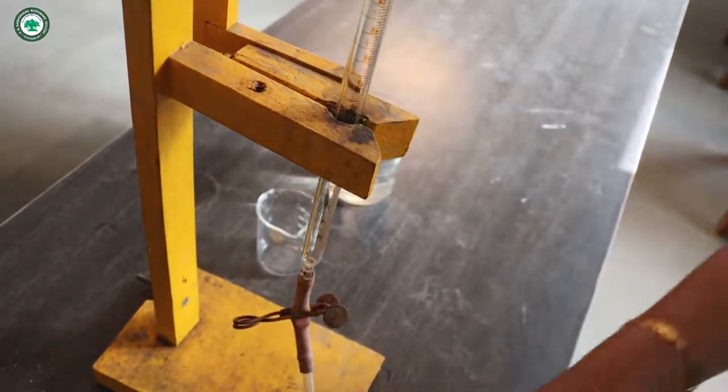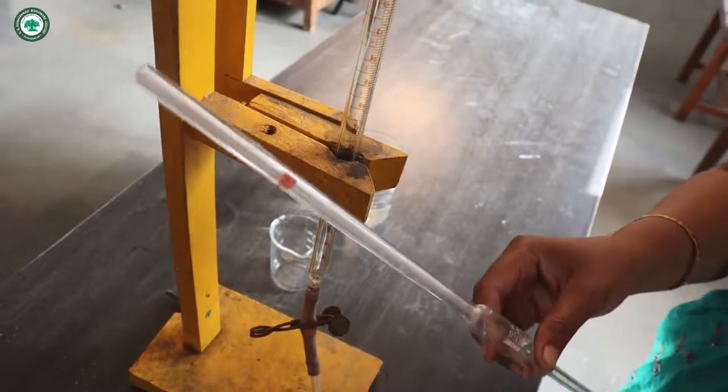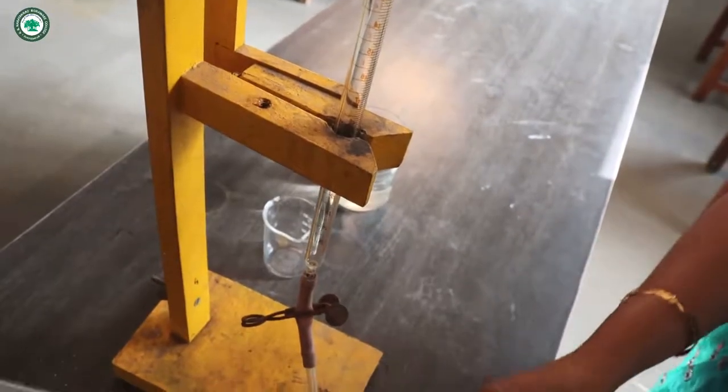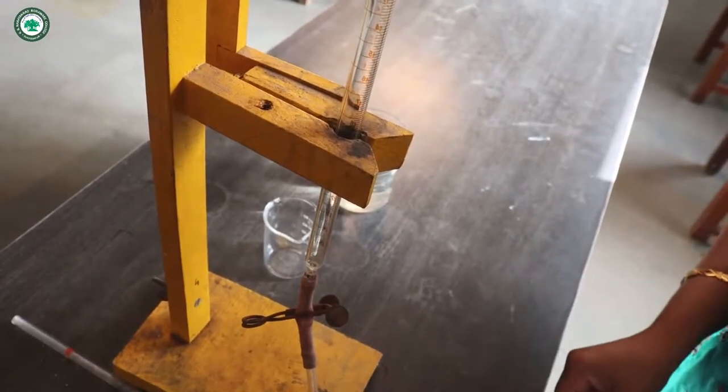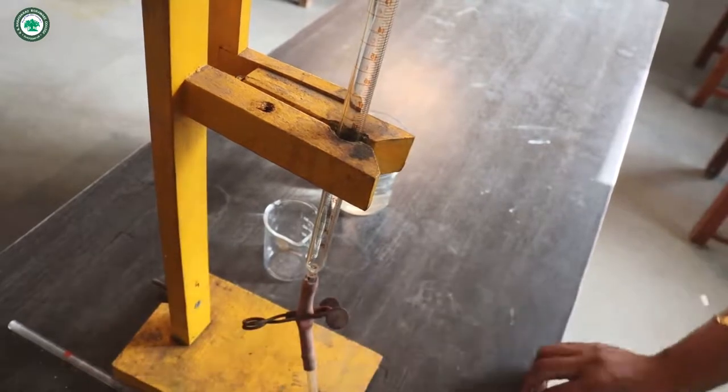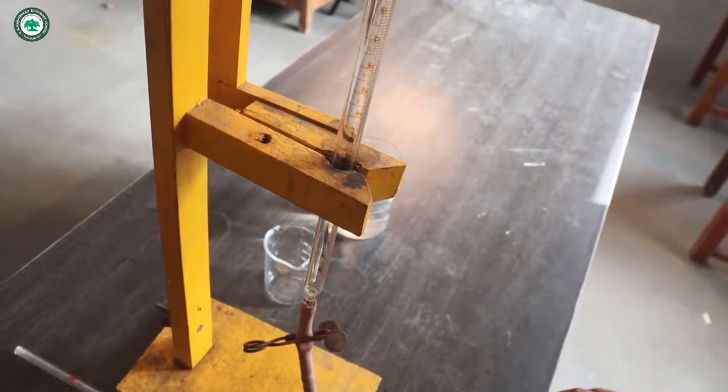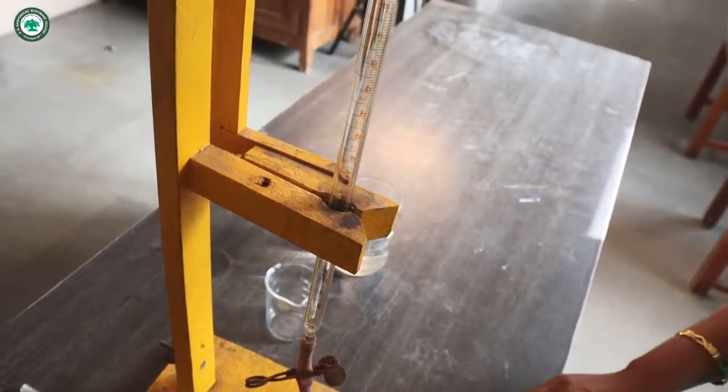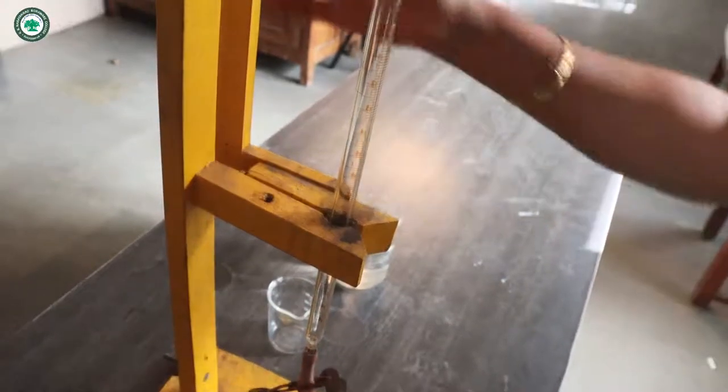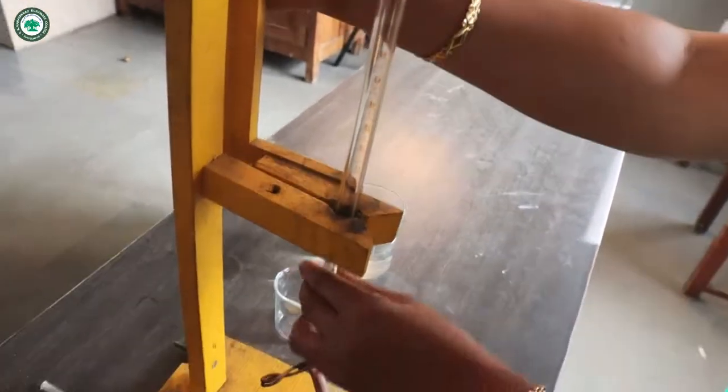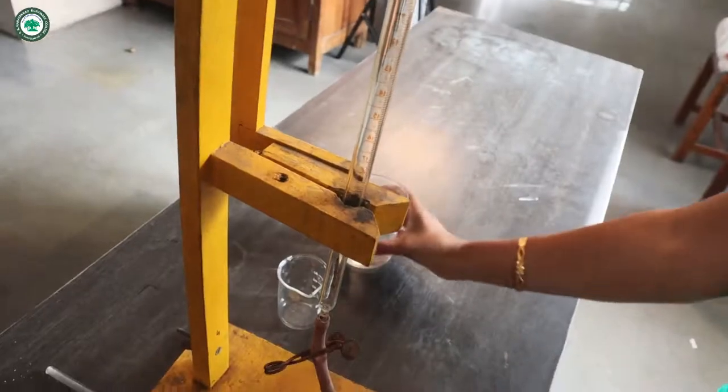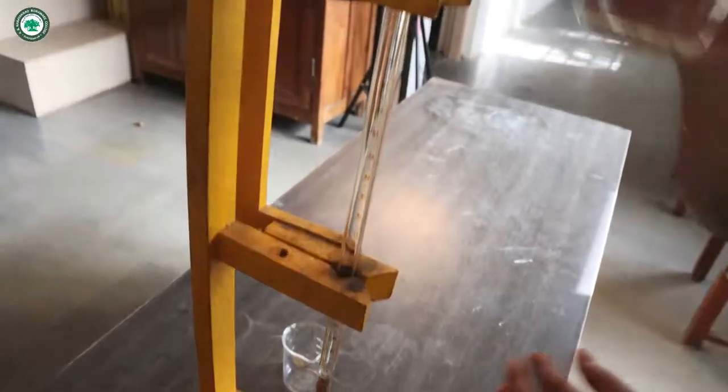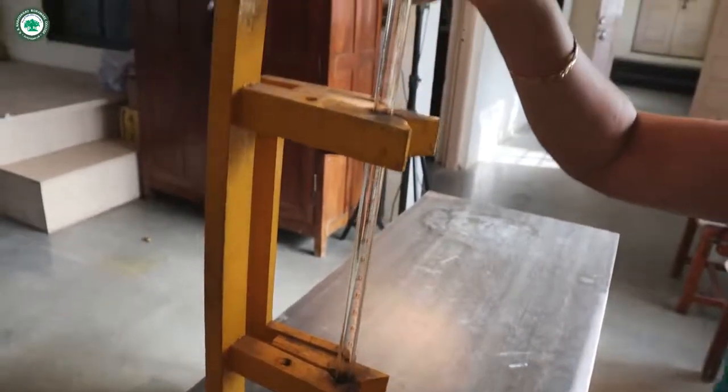Then this is our mixture of 10 ml pipette. First of all, take a 25 ml buret, fix it on the stand. Then fill it with distilled water up to the mark.